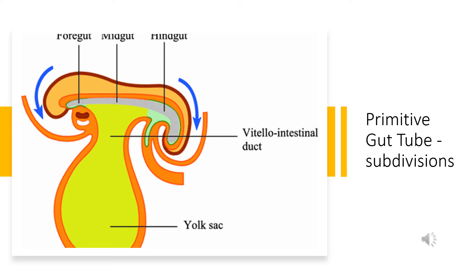As you can see in this picture, the cephalic and caudal parts of the primitive gut form blind-ending tubes. The cephalic part of the primitive gut is called the foregut, whereas the caudal part is termed the hindgut. The part in between the foregut and hindgut is called the midgut. It remains connected to the yolk sac by means of a structure called the vitelline duct or vitello-intestinal duct. So there are three divisions of the primitive gut: foregut, midgut, and hindgut.